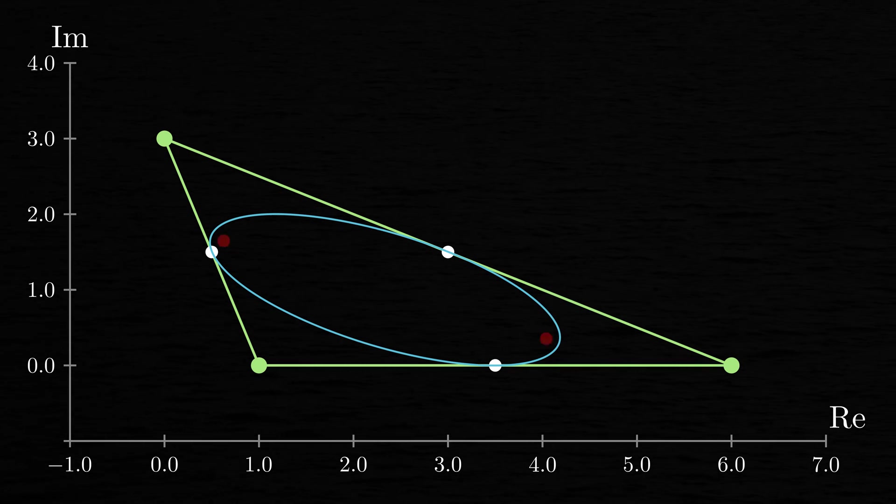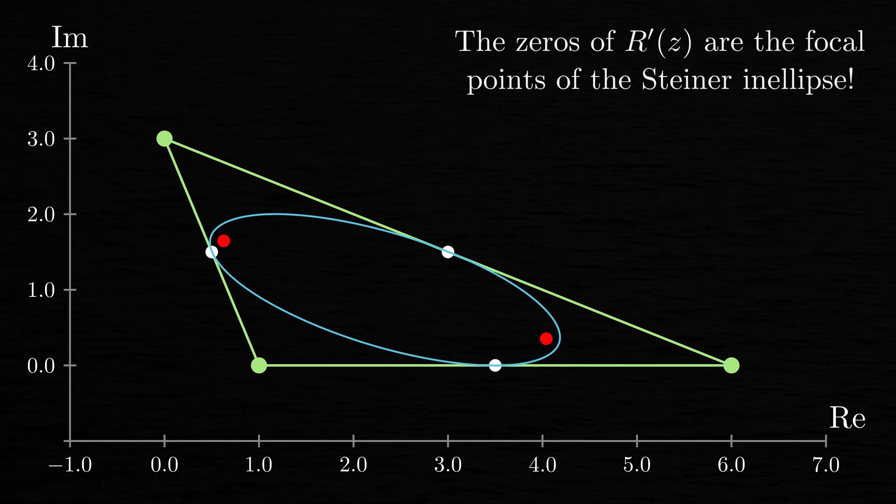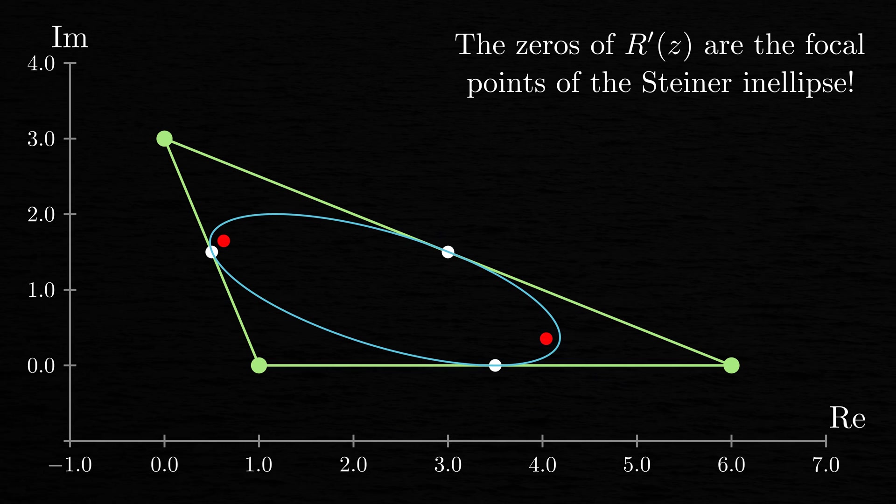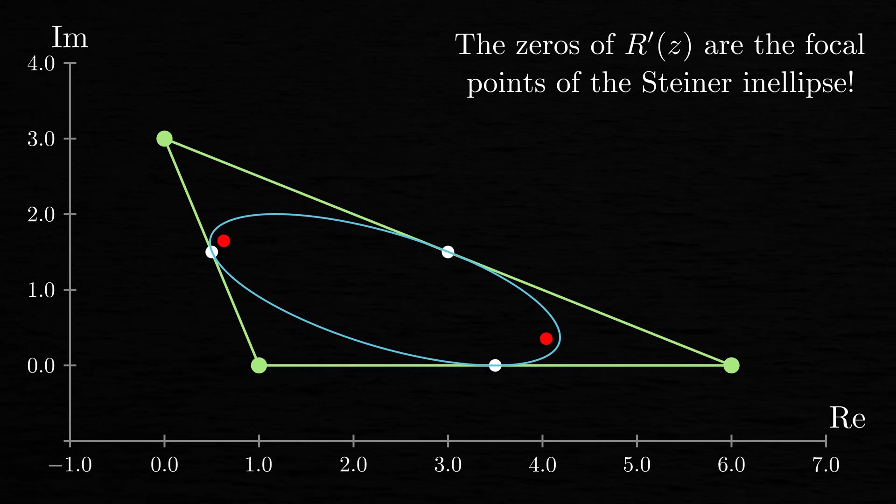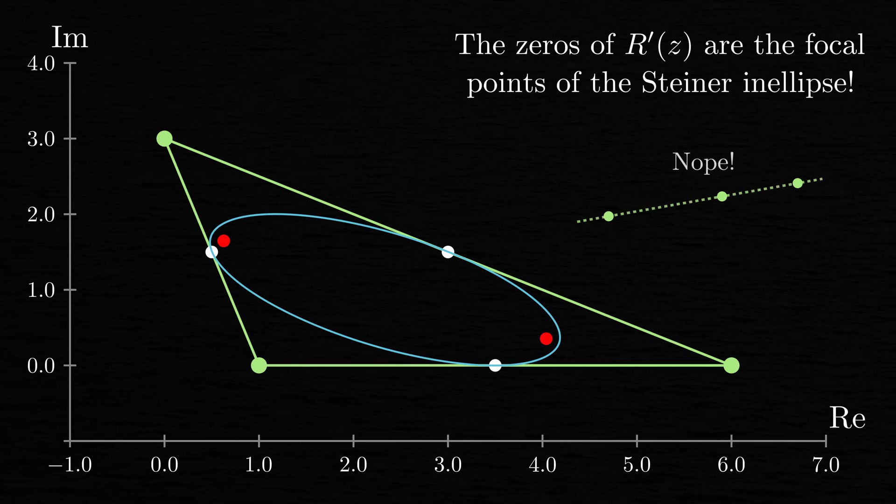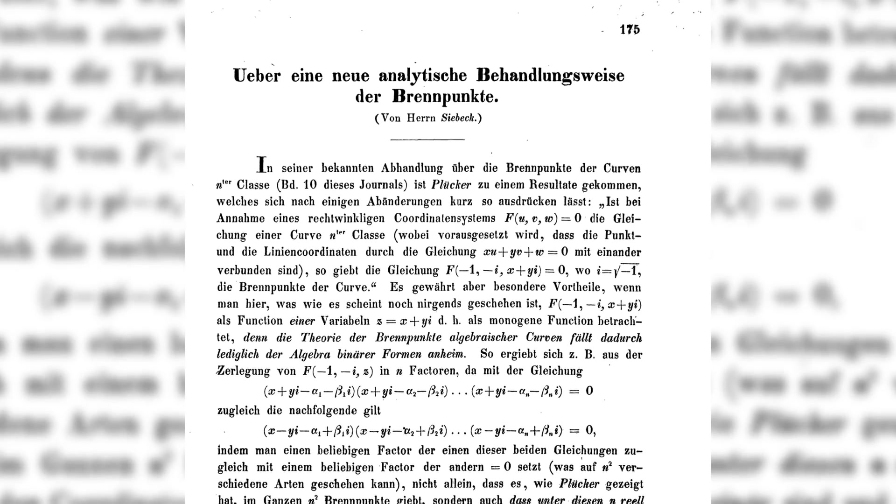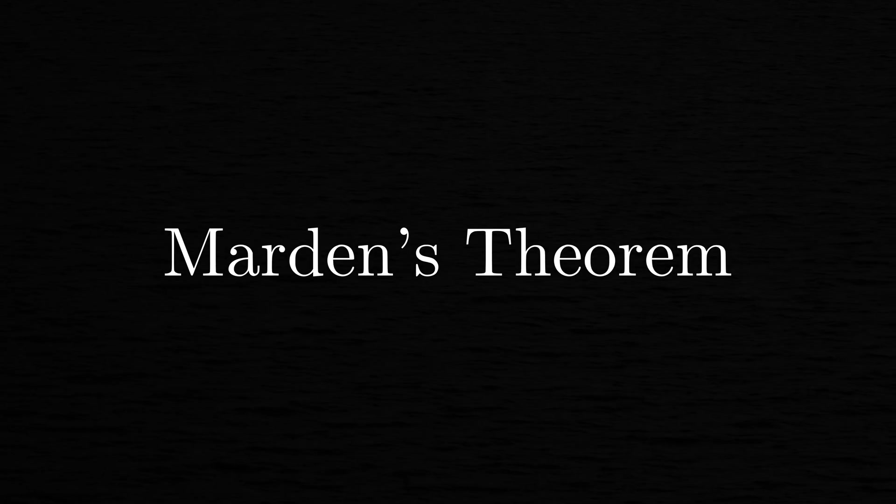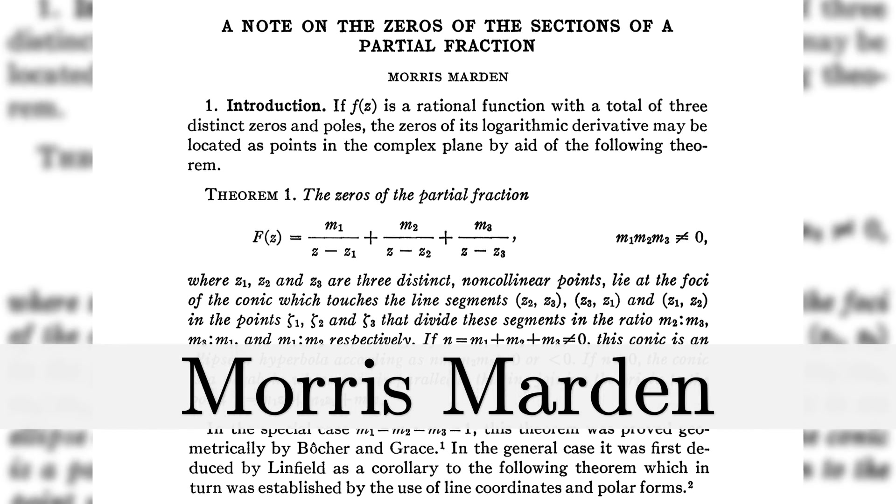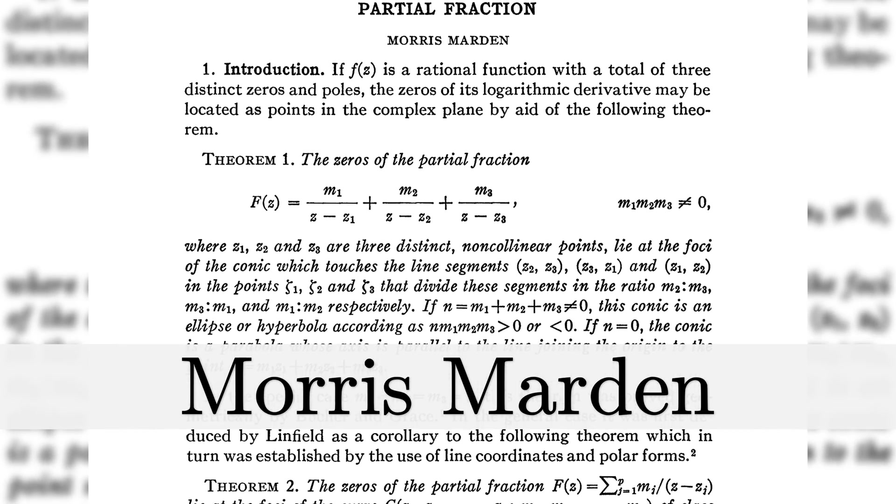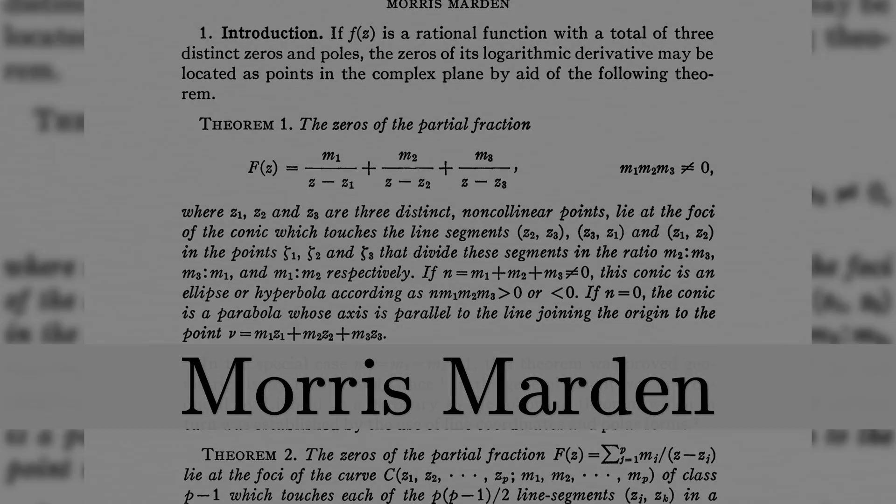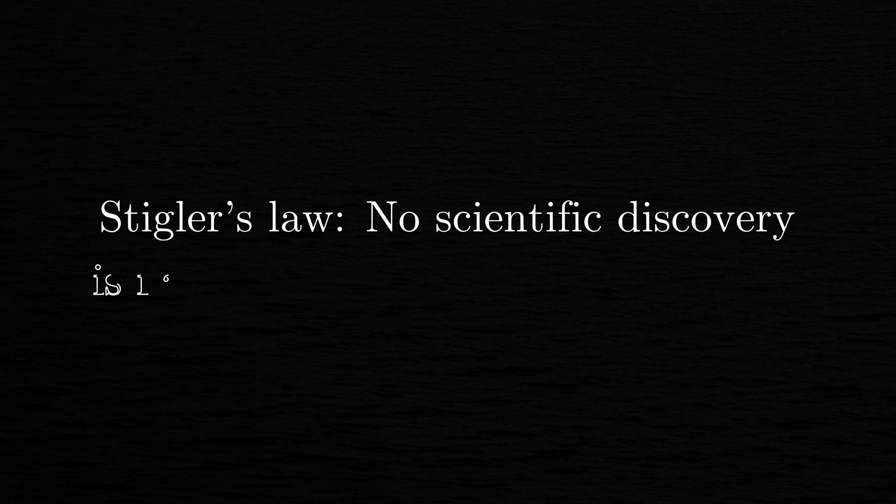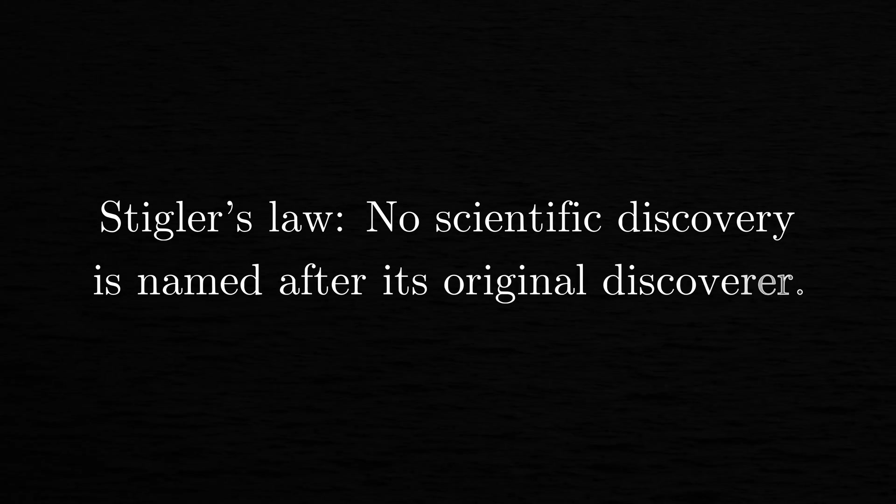Surprisingly, it also turns out that the two zeros of r' are the focal points of this ellipse. This is true for any polynomial r of degree 3, whose zeros don't all lie on the same line. This fact was discovered by Jörg Seebeck back in 1864 and is called Marden's theorem, named after another mathematician who rediscovered this result 81 years later. This in turn is an example of Stigler's law of eponymy, which states that no scientific discovery is named after its original discoverer.